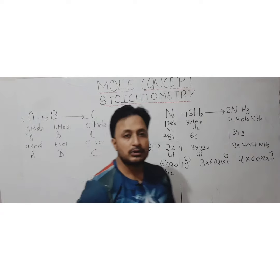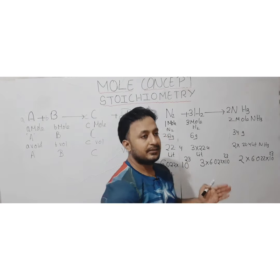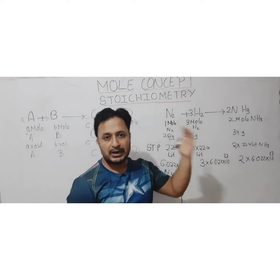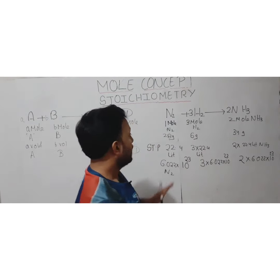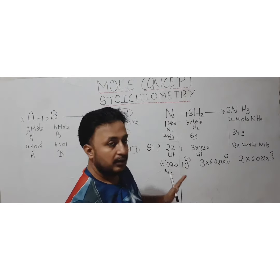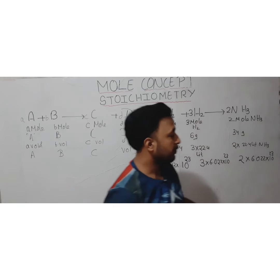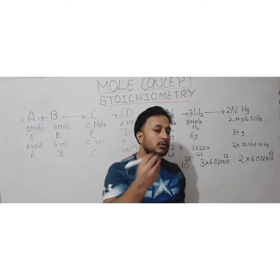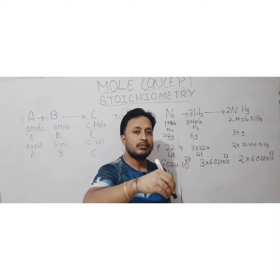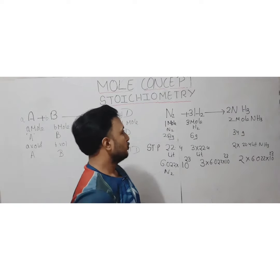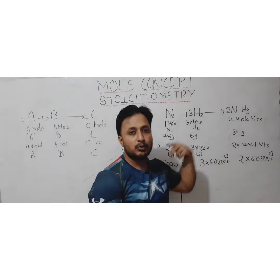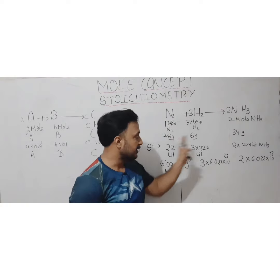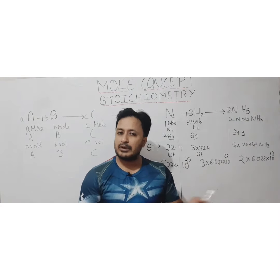Whenever a numerical problem related to stoichiometry appears, first balance the equation, and then write these relationships accordingly. This is required because they may ask you to find an unknown value. For example, if they ask: what amount of ammonia do we get if we use 5 moles of nitrogen instead of 1 mole? You relate: 1 mole gives 2 moles, so 5 moles gives how many? That is how stoichiometry and the unitary method are applied.